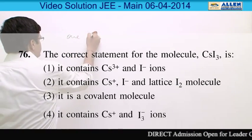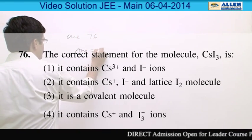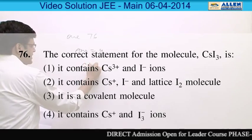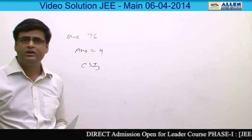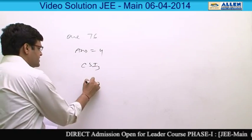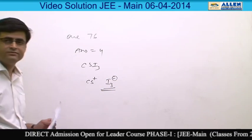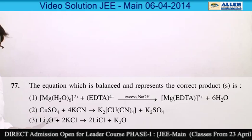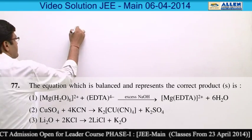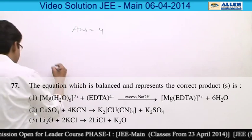Question number 76, and the answer is fourth because CsI3 is an ionic compound consisting of Cs+ and I3- ion. I3- is a polyhalide ion. Question number 77, answer is fourth because...